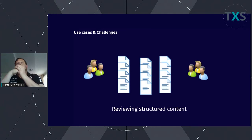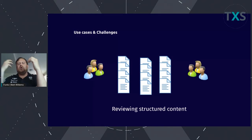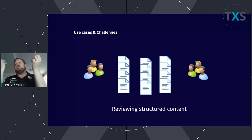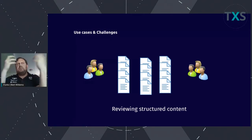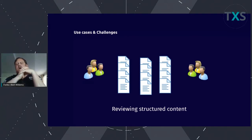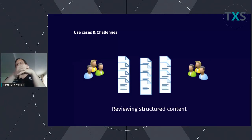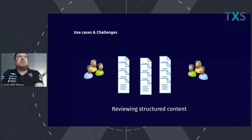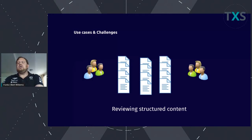What was important to us is the ability to say: you can review your content no matter how many reviewers you have, but at the same time the author should also be able to start addressing those comments, and also start authoring on different sections that are part of the same publication but not yet ready for review. We really want to achieve that parallelism — the ability for reviewers to work in parallel, but also for authors and reviewers to work in parallel. That was a big challenge when we designed review space.